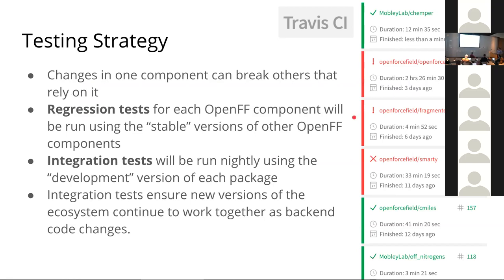Each package will run two types of tests. Regression tests ensure changes to my software work with the previous stable releases of all dependencies and other OpenForceField project components. Integration tests run with the bleeding edge of each component to make sure all development versions work together — only when integration tests pass will we cut a stable release of a new component like the bespoke fitting workflow, rather than sending industry something that breaks when you first try to run it.